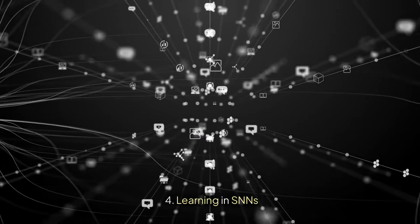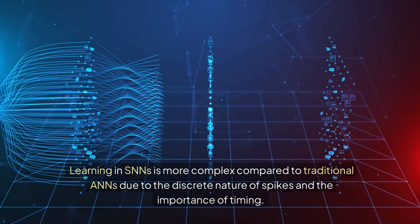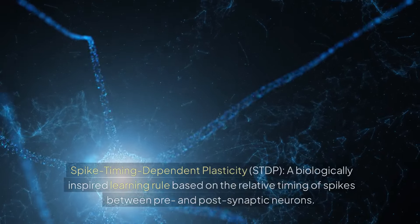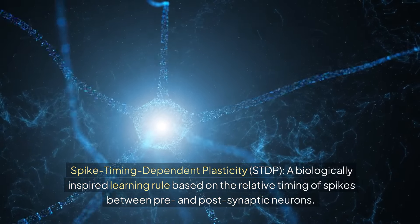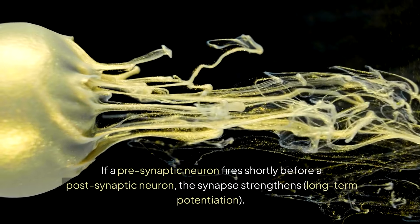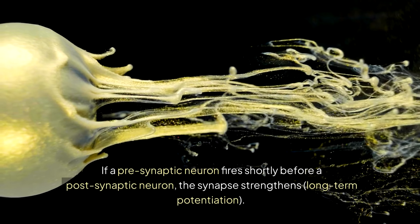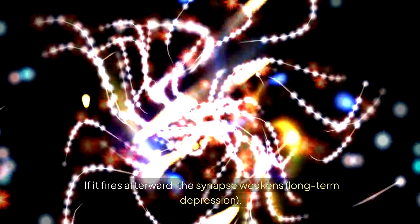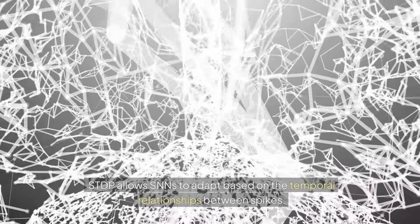4. Learning in SNNs: Learning in SNNs is more complex compared to traditional ANNs due to the discrete nature of spikes and the importance of timing. Common learning mechanisms include Spike Timing-Dependent Plasticity, STDP, a biologically inspired learning rule based on the relative timing of spikes between pre- and post-synaptic neurons. If a pre-synaptic neuron fires shortly before a post-synaptic neuron, the synapse strengthens via long-term potentiation. If it fires afterward, the synapse weakens via long-term depression. STDP allows SNNs to adapt based on the temporal relationships between spikes.